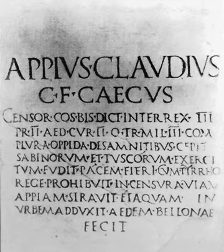Doubled consonant letters, such as CC and SS, represented geminated consonants. In Old Latin, geminate consonants were written singly like single consonants until the middle of the 2nd century BC, when they began to be doubled in writing. Grammarians mention the marking of double consonants with the sicilicus, a diacritic in the shape of a sickle. This mark appears in a few inscriptions of the Augustan era.